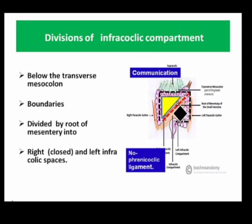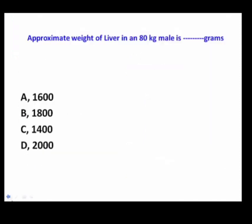There are four paracolic gutters: right lateral, right medial, left medial, and left lateral. Out of these, the right medial paracolic gutter — the boundary of the right upper triangular space of the infracolic compartment — is a closed space. Infections from this compartment cannot spread to other compartments of the peritoneal cavity.